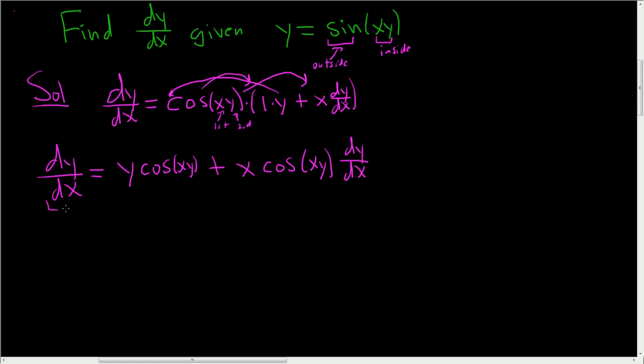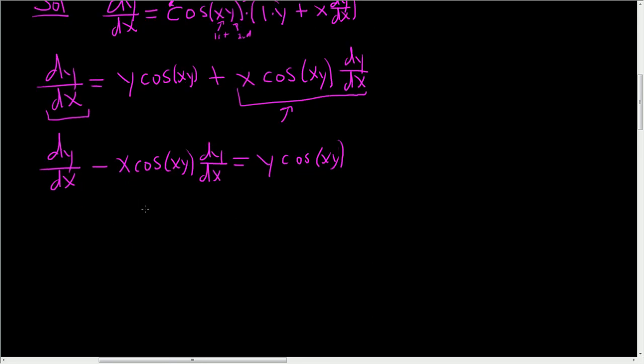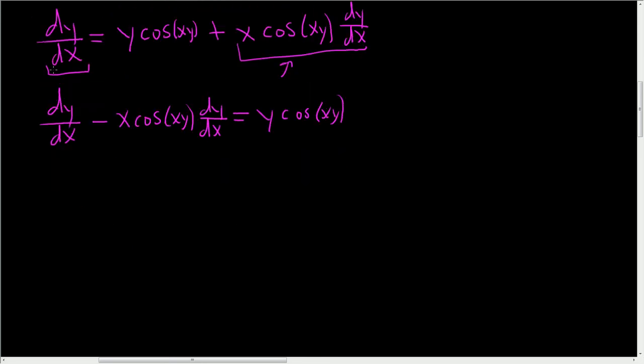We have a dy/dx here and we have a dy/dx here. So I'm going to subtract this guy, so we have dy/dx minus x cosine xy dy/dx equals y cosine xy. Now we have accomplished our goal of having all the terms that contain dy/dx on one side by themselves.